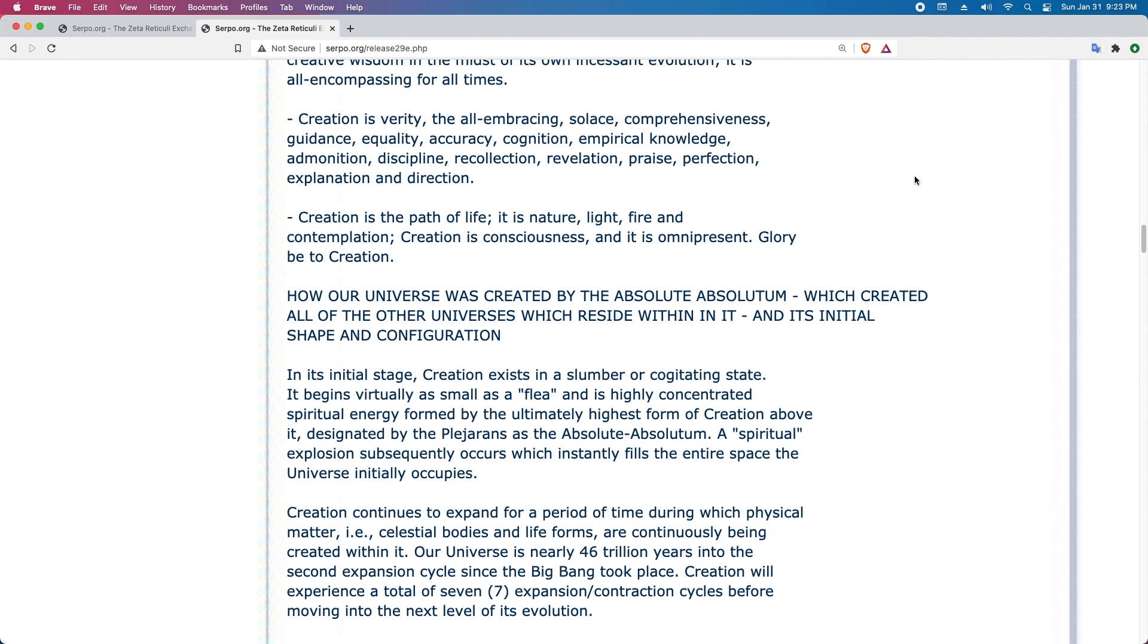Creation is the path of life. It is nature, light, fire, and contemplation. Creation is consciousness. It is omnipresent glory to be creation. How our universe was created by the absolute absolutum, which created all of the other universes which reside within it, and its initial shape and configuration. In its initial stage, creation exists in a slumber or cogitating state. It begins virtually as small as a flea and is highly concentrated spiritual energy formed by the ultimately highest forms of creation above it. Designated by the Plejarens as the absolute absolutum, a spiritual explosion subsequently occurs which instantly fills the entire space the universe initially occupies.